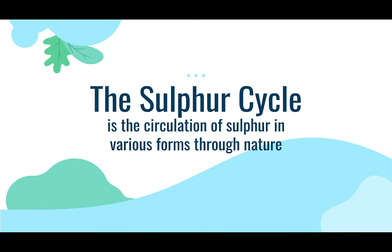The sulfur cycle is the circulation of sulfur in various forms through nature — similar to phosphorus but with sulfur.